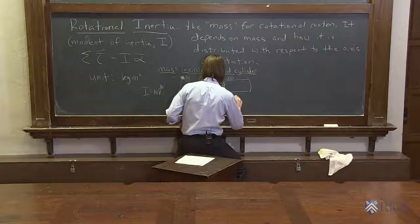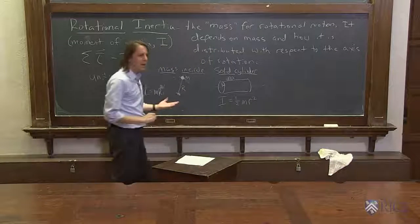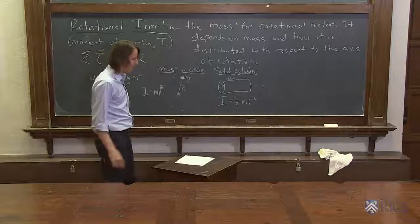Once you specify an axis, then you can give a moment of inertia. And if we did the calculus, we would find it's 1 half m r squared. Why is it a half? You've got to do the calculus. The only way to know.